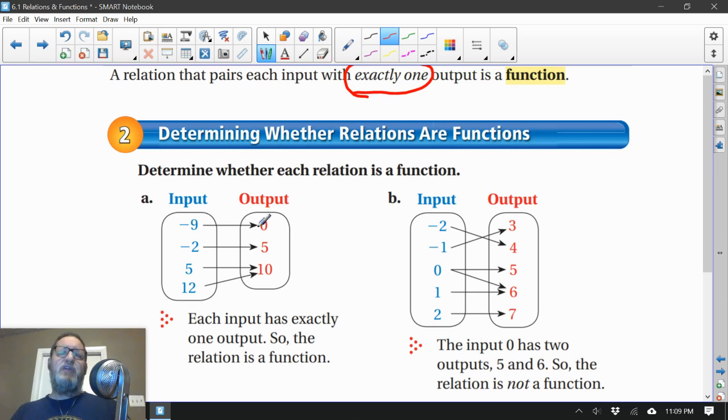Well, let's see here. Negative 9 goes to 0, negative 2 goes to 5, 5 goes to 10, and 12 also goes to 10. Now, does that break the rule? The input has to have exactly one output. This input has one output, this input has one output. They each have one output. So since each input has one output, this is considered to be a function.